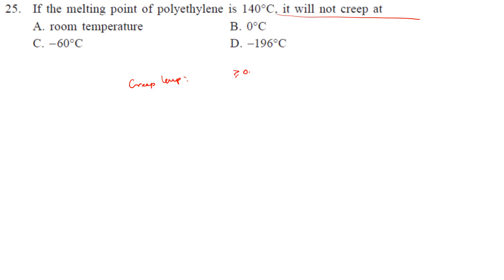Let's find this value: 0.4 times melting point. Remember, the melting point should be in Kelvin always. It will be 140 plus 273. So 0.4 into 140 plus 273 is 165.2 Kelvin. Convert to degrees centigrade: 165.2 minus 273 equals minus 107.8.